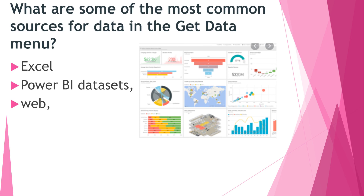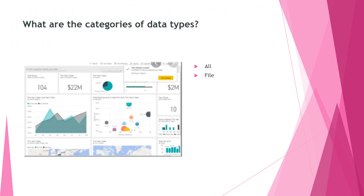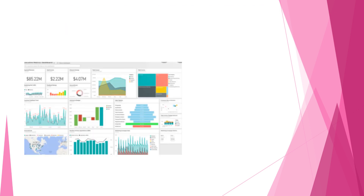What are some of the most common sources for data in the Get Data menu? Excel, PowerBI Datasets, Web, Text, SQL Server, and Analysis Services. What are the categories of data types? All file, database, PowerBI, Azure, and online services.